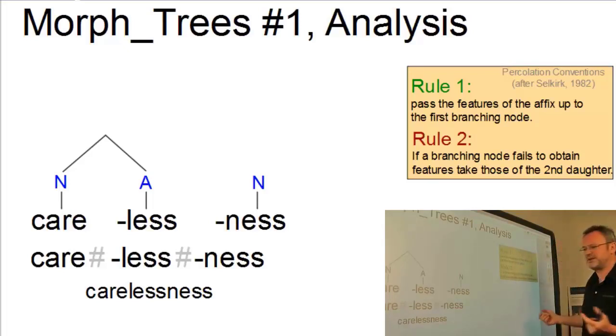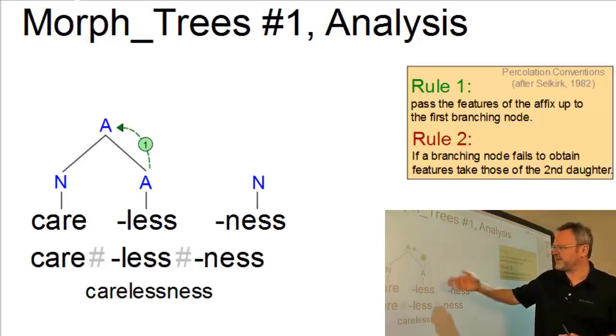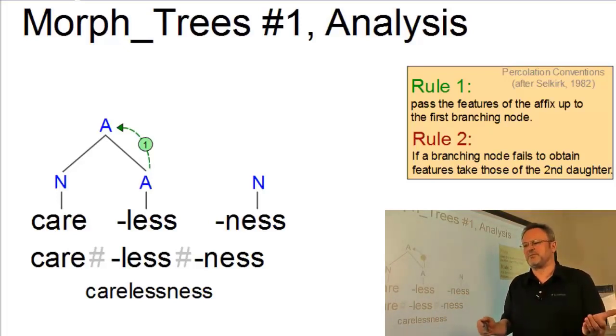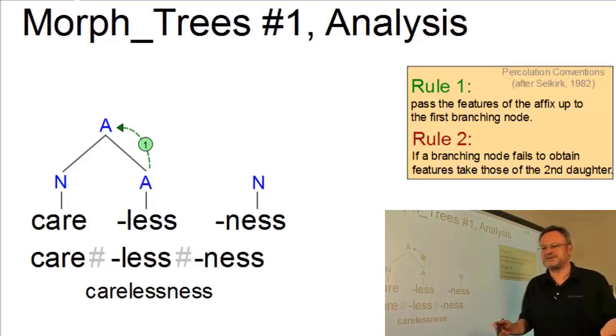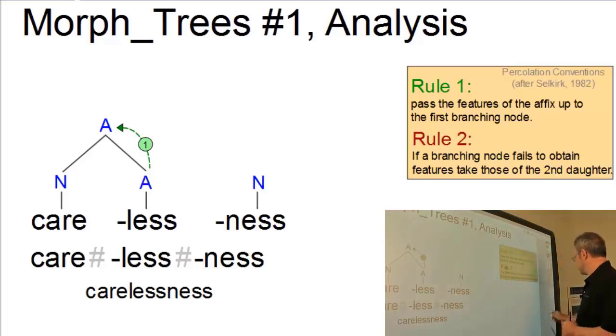In our case, it is relatively simple. We can apply rule number one and pass the features of less to the new mother node. And now we have a new base form. The new base form is careless. And we can combine it with another suitable affix. There is only one. So in other words, we have this structure now.